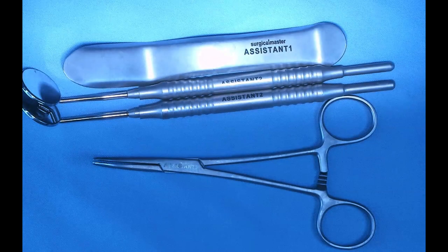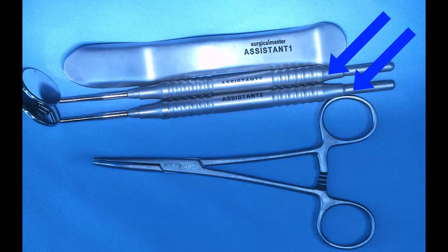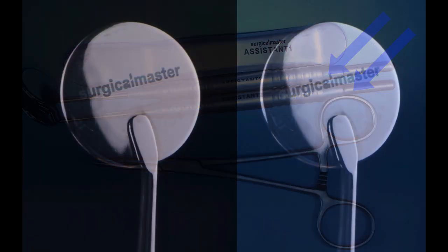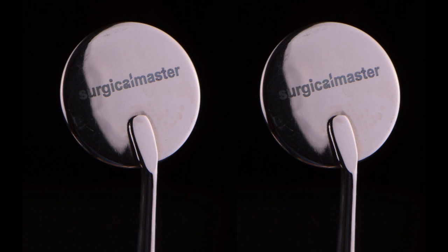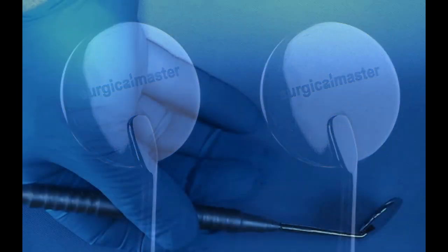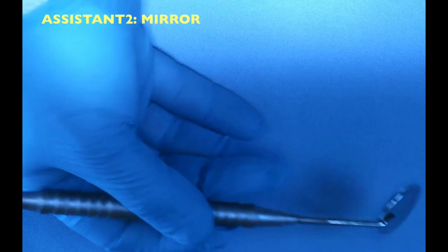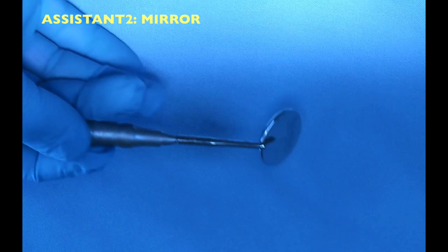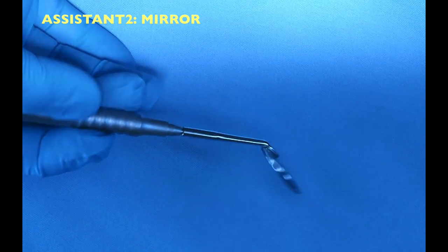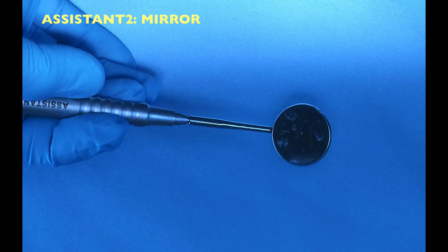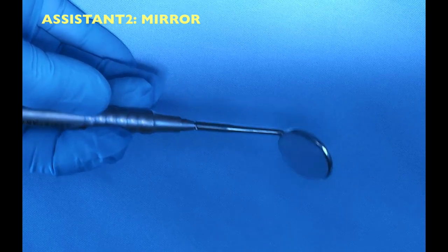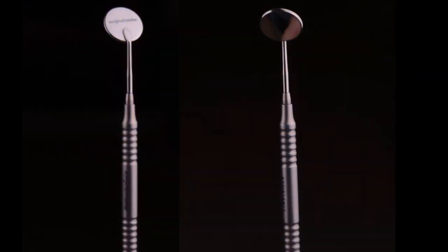Instrument number two is our number five mirror. It's called Assistant Two. We have two of them in the kit. We use mirrors all the time in surgery, mostly for retraction. We use mirrors to retract the lip, the cheek, the tongue, and protect different structures. Therefore we have two of them in the kit: one for my use, one for the assistant's use.